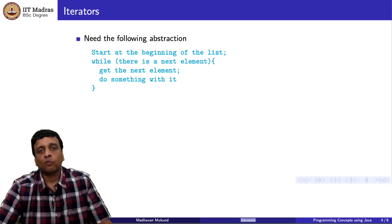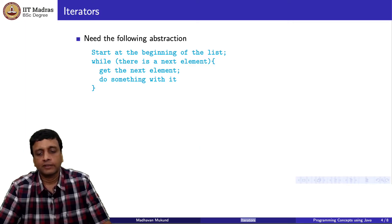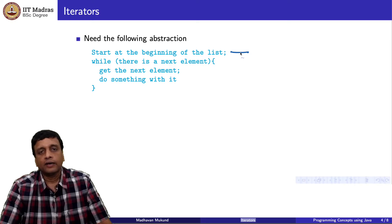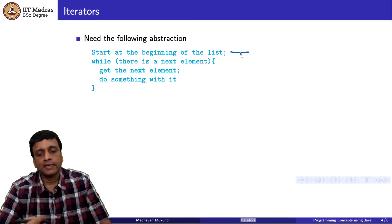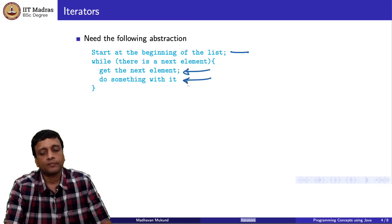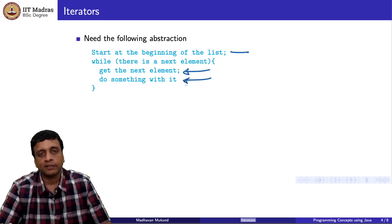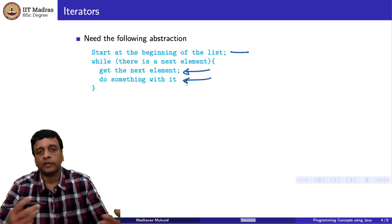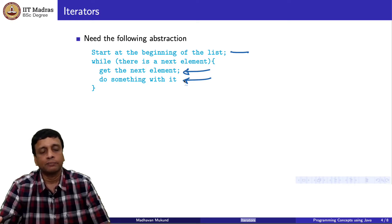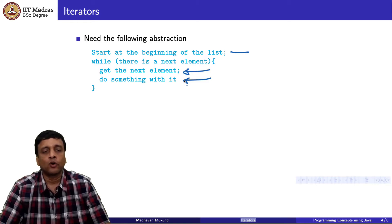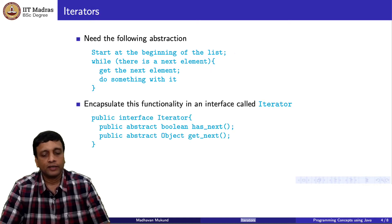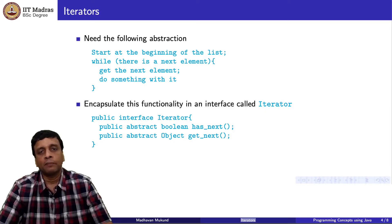What we need is an abstraction of what it means to iterate through a list. It means: start from the first element and keep going until you run out of elements. As long as there is a next element, get it and do something with it — for example, add it to a running total if computing a sum, or check whether it is of a valid type. Once you are done with an element, go to the next one and keep doing this until there is no next element, then stop. This capability is captured through interfaces.